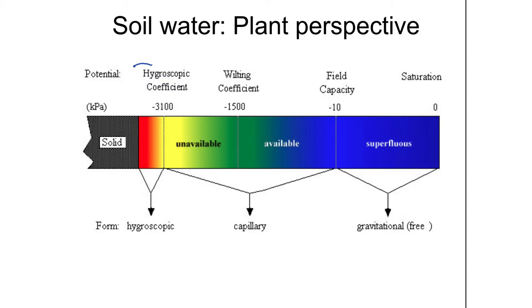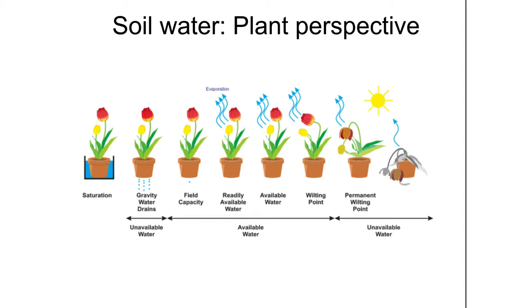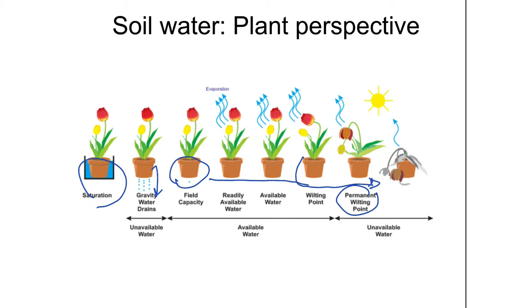These points are really energy levels that are holding water too tightly for plants to access it. So if your plant starts where the water is saturated, water drains out, you have the field capacity, plants are happy for a while until the soil becomes too dry, and then eventually the water is held at such a point that the plant can't extract it. It reaches the permanent wilting point, which means there's no return back to living — it's only on its way to being dead.